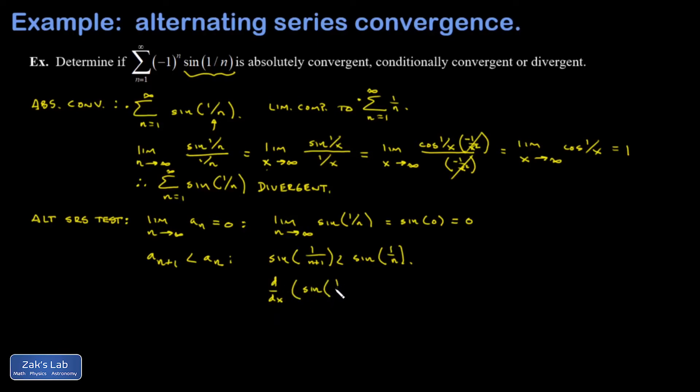Again, if I want to differentiate, I should express it as a function of real numbers and not integers. And I have the first derivative of sine 1 over x. And that's cosine 1 over x multiplied by negative 1 over x squared.